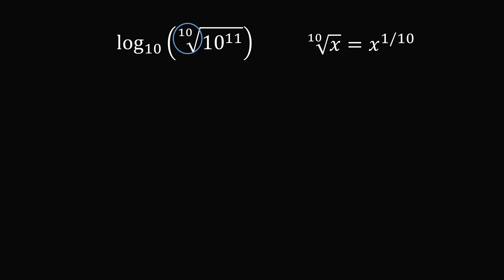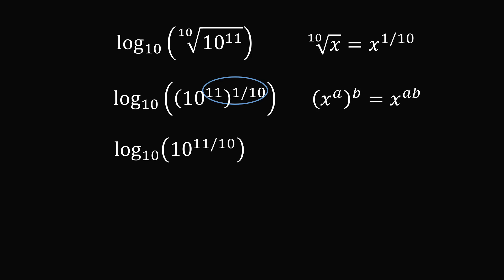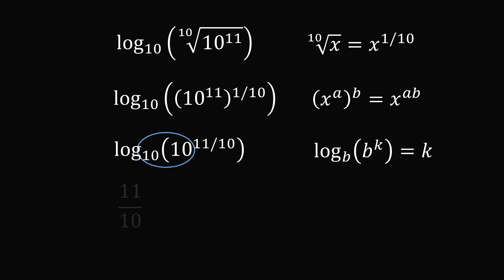For a real number x, the principal tenth root of x is equal to x to the power of 1 over 10. So let's rewrite this tenth root as an exponent. Now we have an exponent raised to an exponent. We can use the rule that x to the power of A, raised to the power of B, equals x to the power of A times B. So the exponent becomes 11 over 10. Finally, we have log base 10 of 10 to the power of an exponent — log base B of B to the power of K equals K. So this all simplifies to 11 over 10.